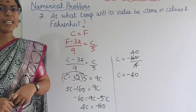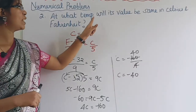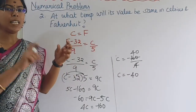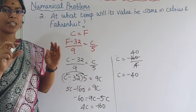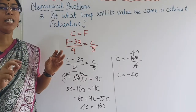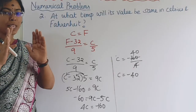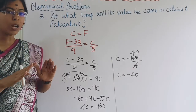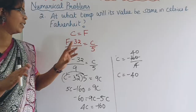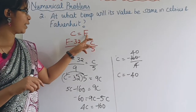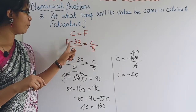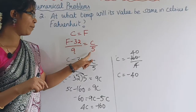Next is the second question: at what temperature will its value be the same in both Celsius and Fahrenheit? So we set Celsius equal to Fahrenheit and use the formula (F - 32) / 9 = C / 5.